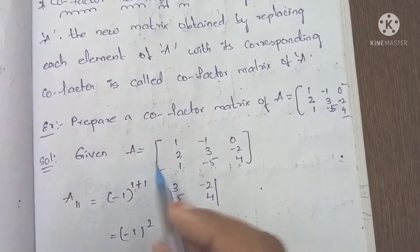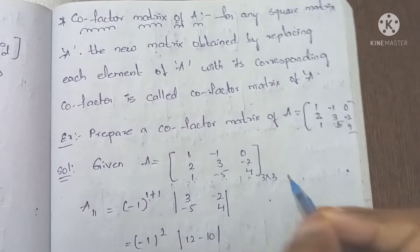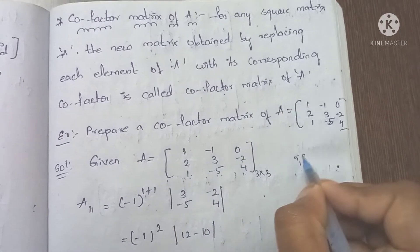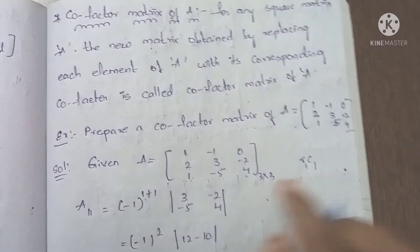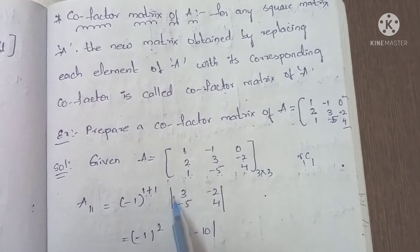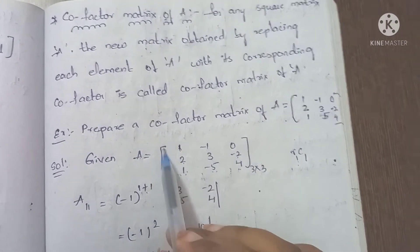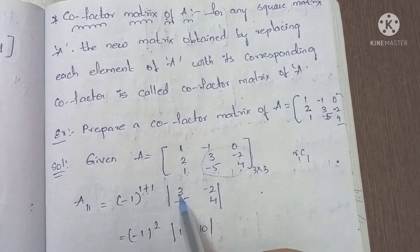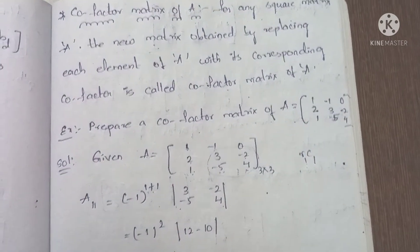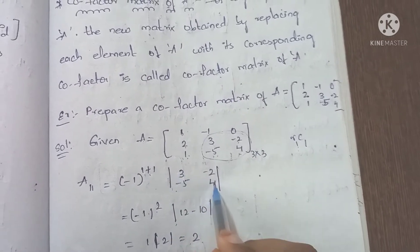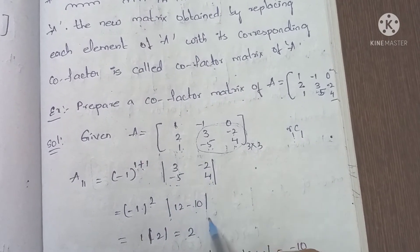Finding cofactor of first element: element 1 is at row 1, column 1. The cofactor formula is (-1)^(i+j) times the minor. So C11 = (-1)^(1+1) times the minor. Eliminating row 1 and column 1, the remaining submatrix is [3, -5; -2, 4]. Determinant = 3×4 minus (-5)×(-2) = 12 minus 10 = 2. Since (-1)^2 = 1, cofactor C11 = 1×2 = 2.